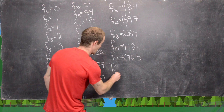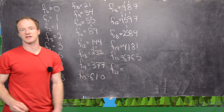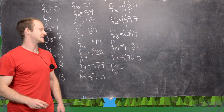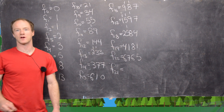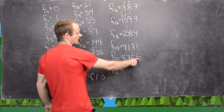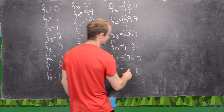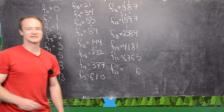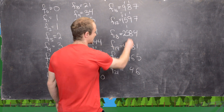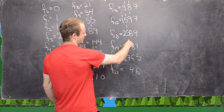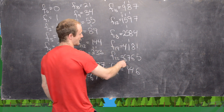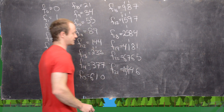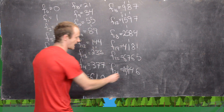And then finally, the 21st Fibonacci number will be 6,765 plus 4,181. So here we have 5 plus 1, which is 6. 6 plus 8, so that's going to give us 14. 7 plus 1 plus 1 is 9. And now we have 6 plus 4 is 10.